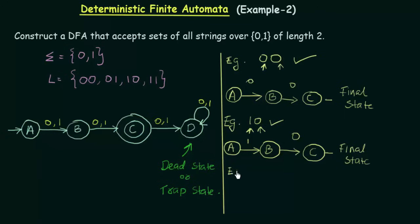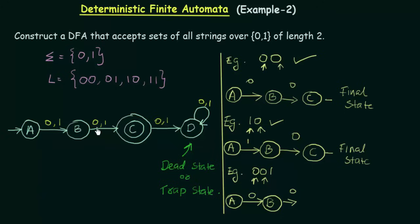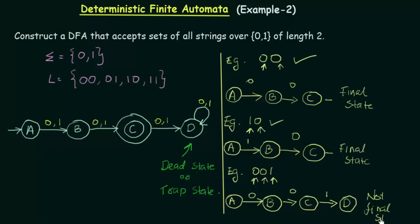Now let's check a longer string: 001. I start from initial state A. First input is 0, so A goes to B. The next input is again 0, so in state B on input 0 it goes to state C. But there is one more input which is 1. I am in state C and on getting input 1 it goes to state D. I have reached the end of the string and I am in state D, which is not the final state — there is no double circle. So 001 is not accepted.